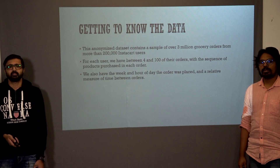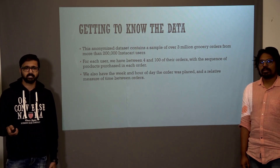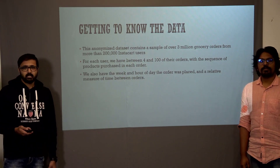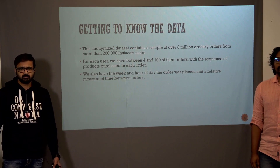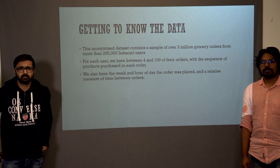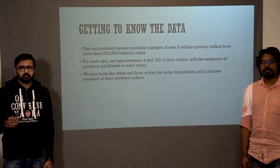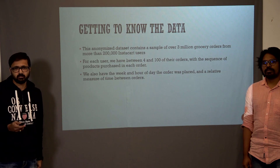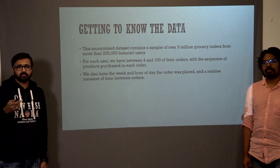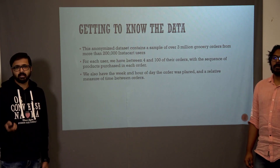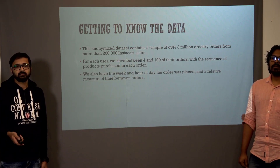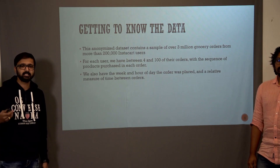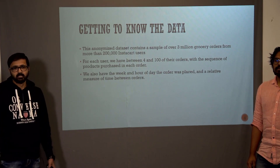The data has been anonymized by Instacart, which means there's no personal information about the users. There are more than 3 million grocery orders and more than 200,000 Instacart users captured. The number of orders per user is between 4 to 100. We also have the hour of the day and day of the week when each order was placed, as well as the time between successive orders — how many days after a previous order the user makes a new one.